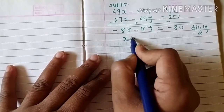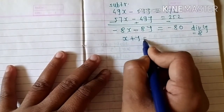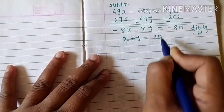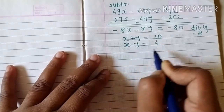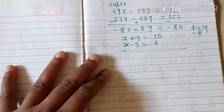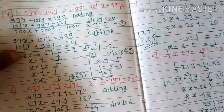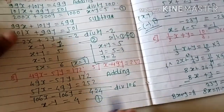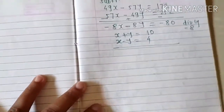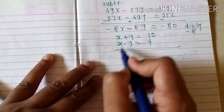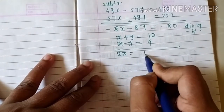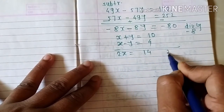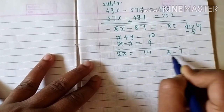Equation one is x minus y equals 4 and equation two is x plus y equals 10. Solving by addition: y and minus y cancel, giving 2x equals 14, so x equals 7.